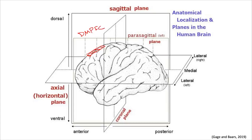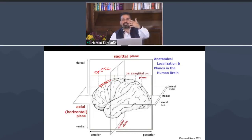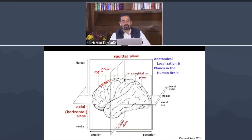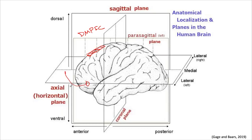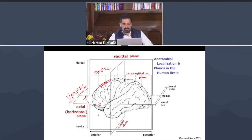You need to learn these areas in a three-dimensional way. In two dimensions it's hard to see the depth, but the medial part is the part close to the center and the lateral part is farther out. Going below and inside gives us the ventromedial prefrontal cortex, or vmPFC — ventral because it's down, and medial because it's toward the center.